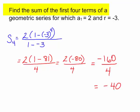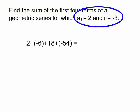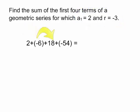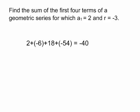Now let me show you something. I know that the first term is 2 and the common ratio is negative 3. So 2 times negative 3 is negative 6. Negative 6 times negative 3 is positive 18. 18 times negative 3 is negative 54. When I add these together I will get the same answer — negative 40.